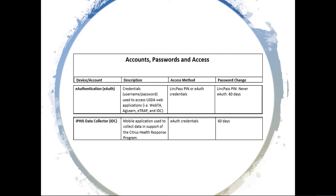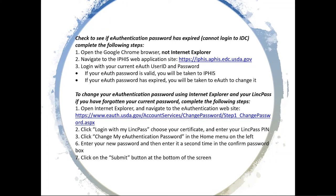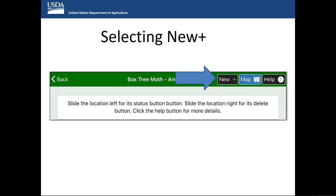Since you use e-authentication to log in, remember that e-authentication expires every 60 days. You don't get notified that it's expired — the only way you'll notice on IDC is that it won't let you log in; it will not move forward. If that happens, you'll need to log in to the desktop and update your password. We have links here on how to reset your password for e-authentication, or if this is your first time using IDC, these are the steps you will follow.